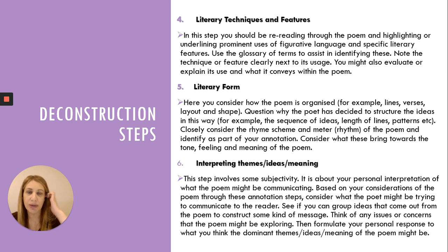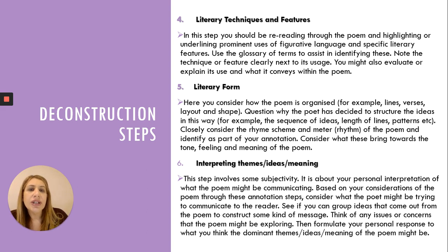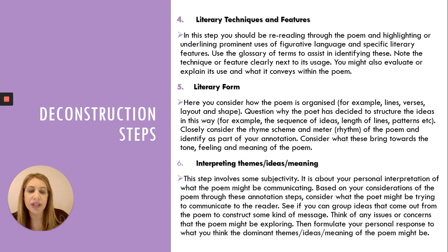So what is he trying to convey in his poetry? Literary techniques and features: reread through the poem, highlighting or underlining any figurative language or literary features. There's a lot of consonants and a lot of symbolism in this one. Note the technique clearly next to its usage when you're annotating. You may also evaluate or explain its use — why is it being used? What is it showing us? Why use that technique and not something else?